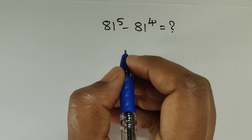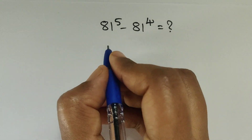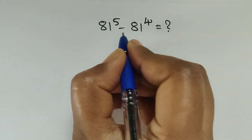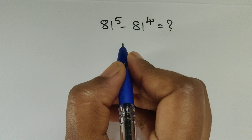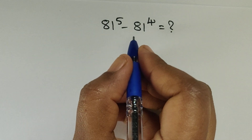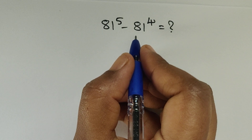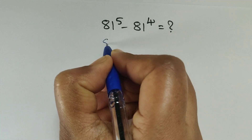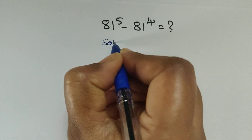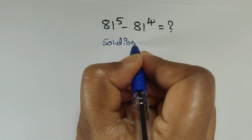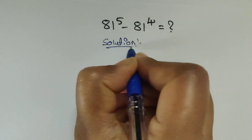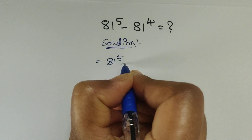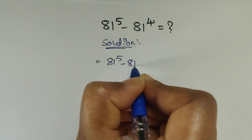Hello everyone, welcome back to our channel. Here we have one problem: 81 to the power of 5 minus 81 to the power of 4. How do we solve this problem without using a calculator? Let me know your clue. See here the solution. So here we have given 81 to the power of 5 minus 81 to the power of 4.